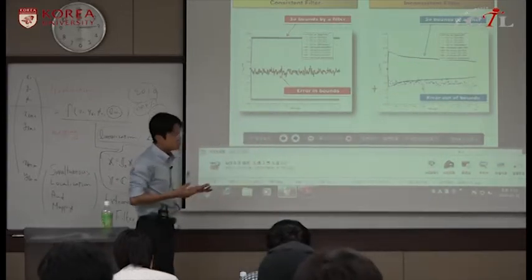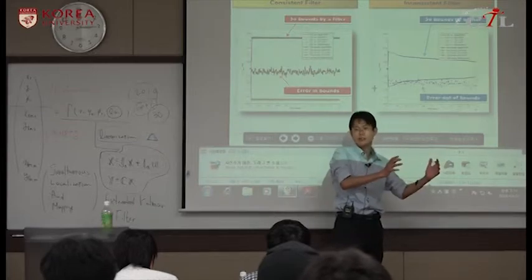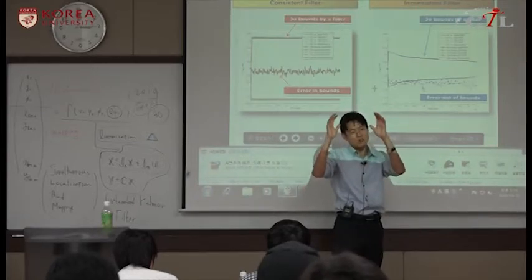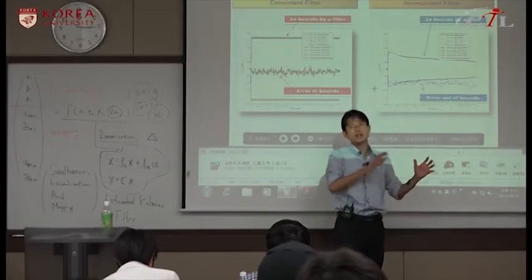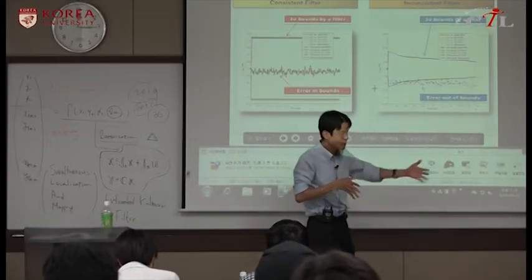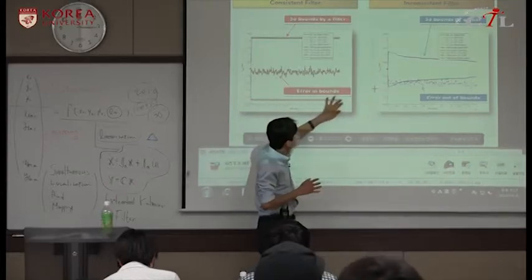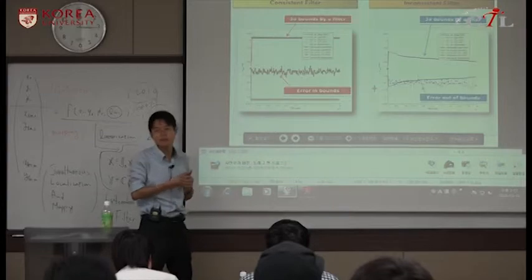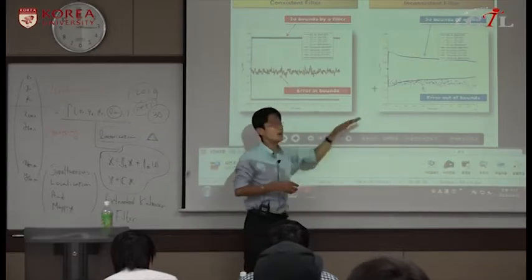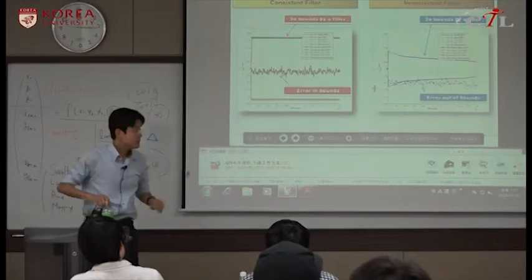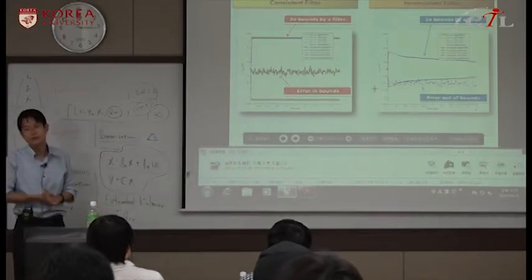So what this paper introduced is that okay then let's constrain the observability matrix rank as one smaller one. Forcefully projecting the observability rank into one step smaller. Forcefully. So it's observability constraining method. So if they apply the observability constraining, then like this figure, the three sigma bound is not decreasing, it's stationary, then the states are staying within those two boundaries for a long time. So this made the extended Kalman filter far more useful.